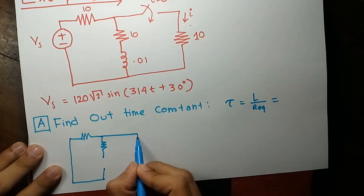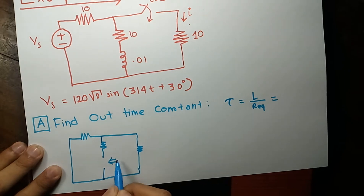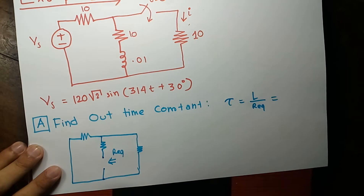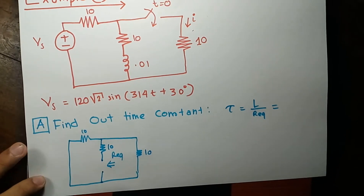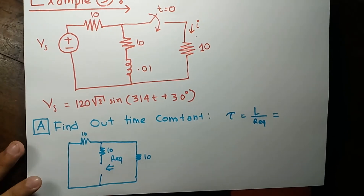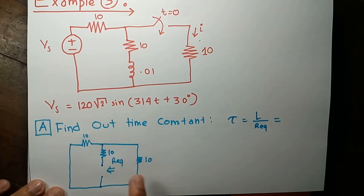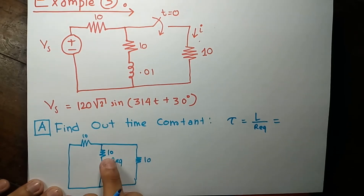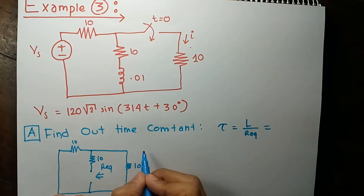Here is another 10 ohm resistance and I have to find out the resistance seen from this terminal. The three resistances each have value 10 ohms. This is series-parallel mathematics: this 10 is in series with the parallel combination of the other two 10s. That parallel combination gives 5 ohms, and 10 plus 5 gives R equivalent equal to 15 ohms.